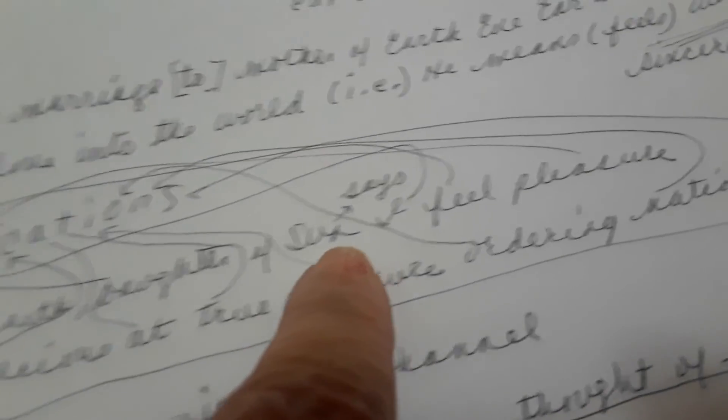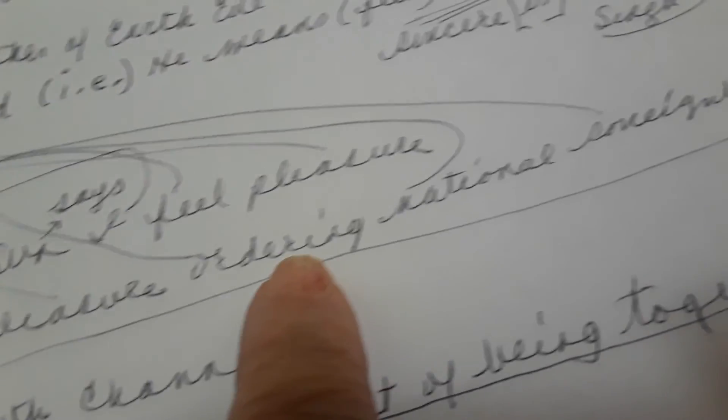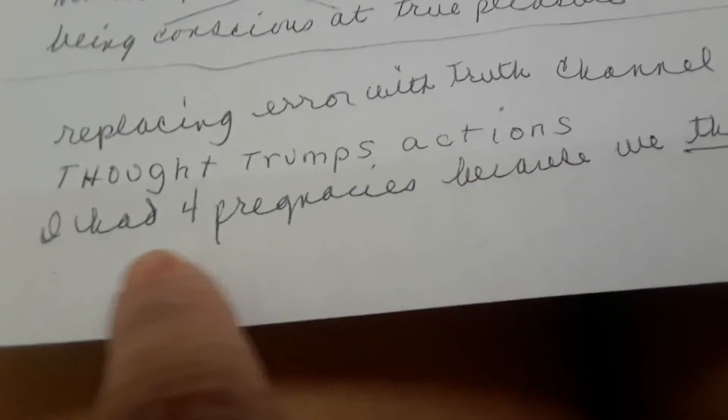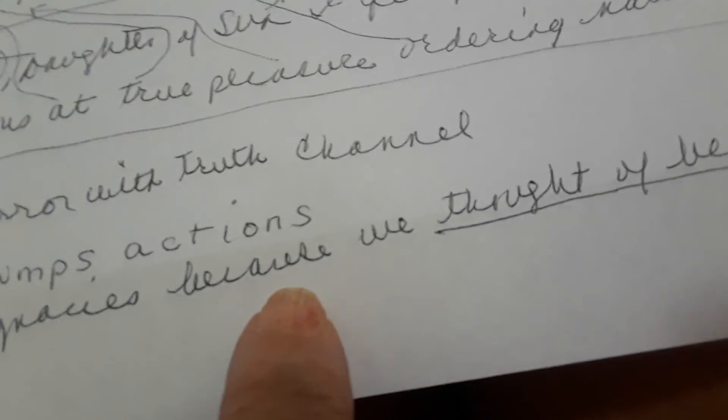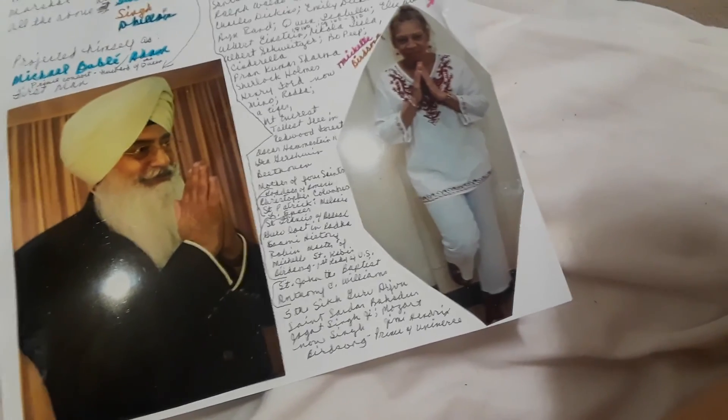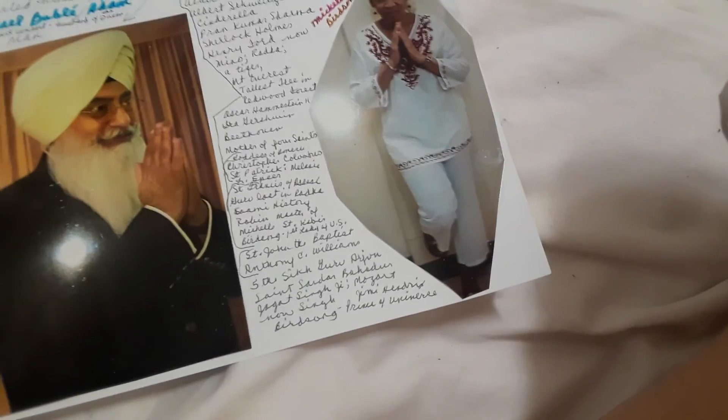Replacing error with truth, channel says thought trumps actions. I had four pregnancies because we thought of being together, and that's a fact. I'll tell you more about that in another video. Thank you for watching this video. I hope you all got a heads up on what's going on in the world and the orders from God. Thank you. So long.